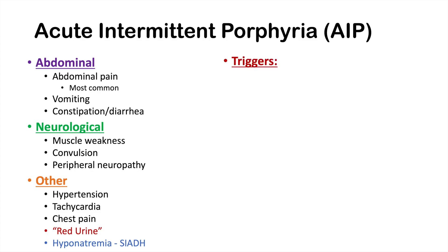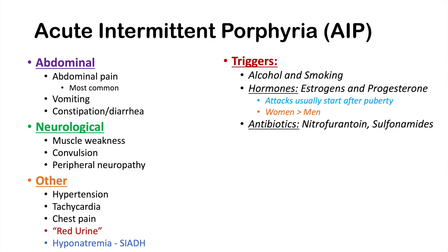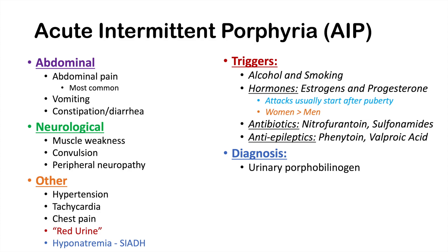Triggers for acute intermittent porphyria include alcohol and smoking. Hormones like estrogens and progesterone can also be a trigger — attacks generally occur after puberty, and women have more attacks than men. Antibiotics like nitrofurantoin and sulfonamides can trigger AIP, as can anti-epileptic drugs such as phenytoin and valproic acid, and barbiturates. Diagnosis involves looking for urinary porphobilinogen, serum levels of ALA and PBG, and genetic testing.